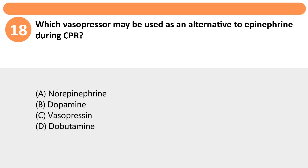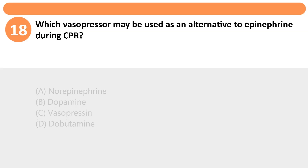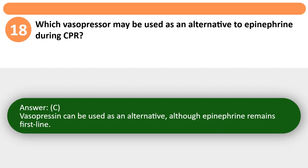Which vasopressor may be used as an alternative to epinephrine during CPR? A. Norepinephrine. B. Dopamine. C. Vasopressin. D. Dobutamine. Answer: C. Vasopressin can be used as an alternative, although epinephrine remains first line.